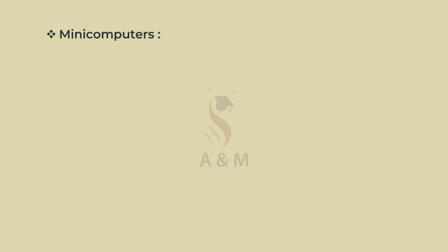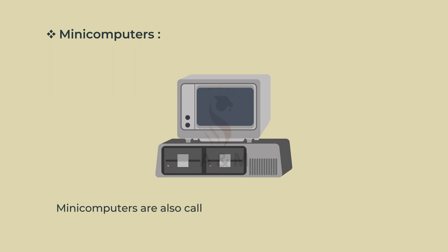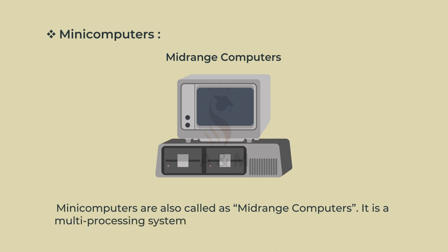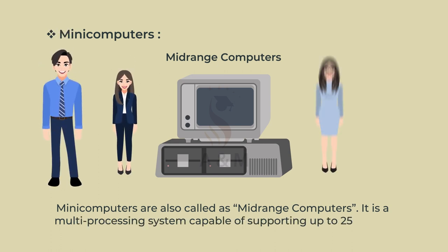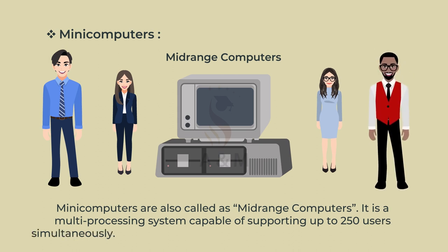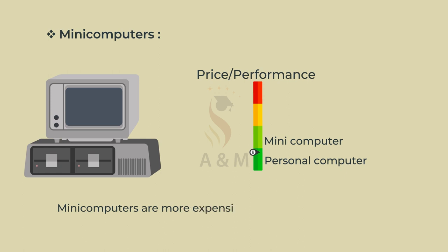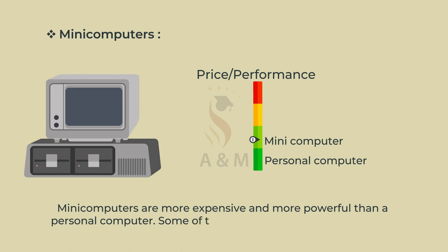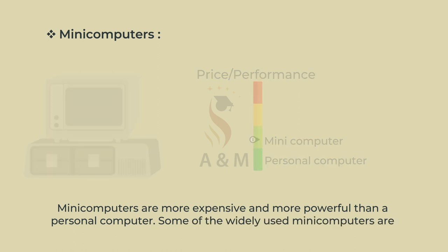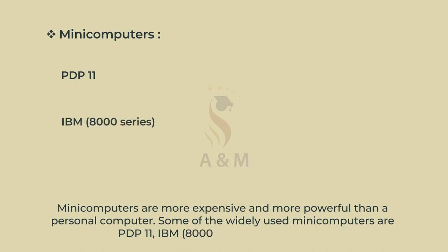The second classification of computers is Mini Computers. Mini Computers are also called Mid-Range Computers. It is a multi-processing system capable of supporting up to 250 users simultaneously. Mini Computers are more expensive and more powerful than a personal computer. Some of the widely used Mini Computers are PDP-11, IBM 8000 and VAX 7500.